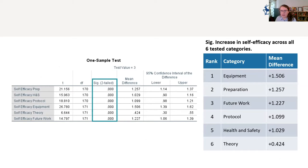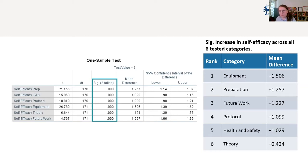The greatest difference was in the equipment area — which we would expect, as the lab software particularly targets equipment self-efficacy by giving students a chance to use it virtually and then use it again in the lab. Although still statistically significant, the smallest mean difference was in the theory area — students felt more confident asking questions around theory, but it wasn't as large a change as in equipment or preparation.